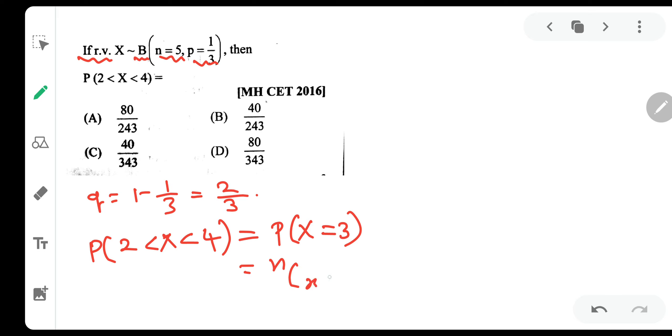So nCx p raised to x, q raised to n minus x is our formula. n is the number of trials, so number of trials they have given 5. So 5C, how many times they want success? Three times.